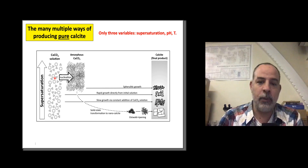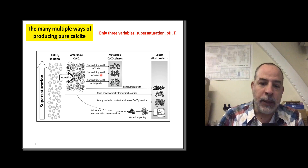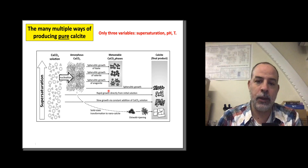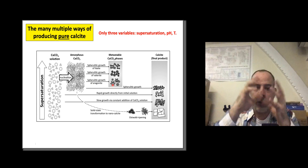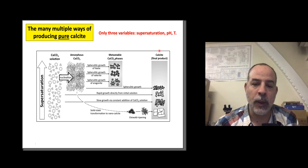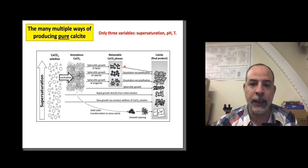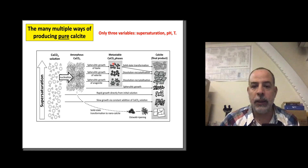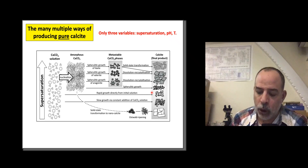These metastable phases are all calcium carbonate but they are metastable — they form very quickly via spheroidal growth forming spherules, then transform into calcite usually via dissolution and recrystallization. One exception is ikaite, which can sometimes transform into calcite via solid-state transformation. So you have a big picture where at the end you only have calcite, but all these calcites are completely different from each other.